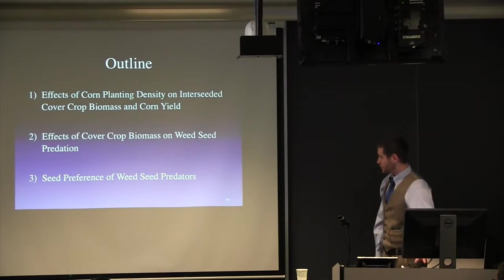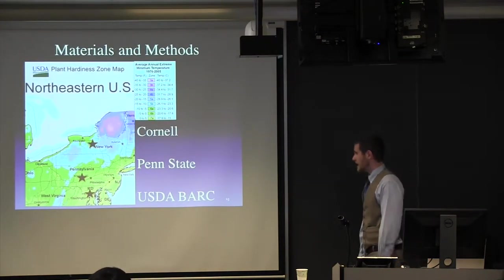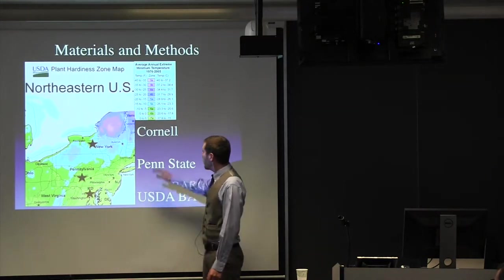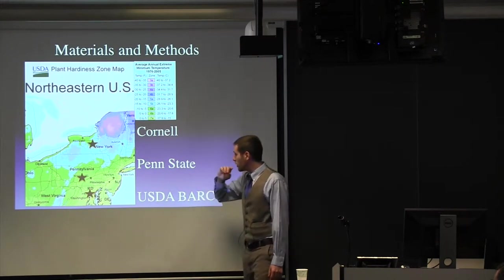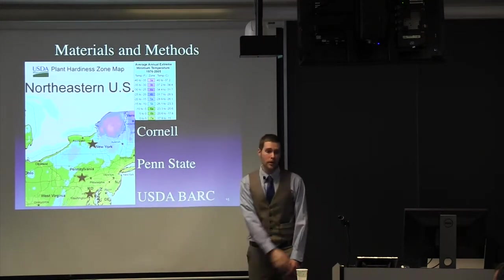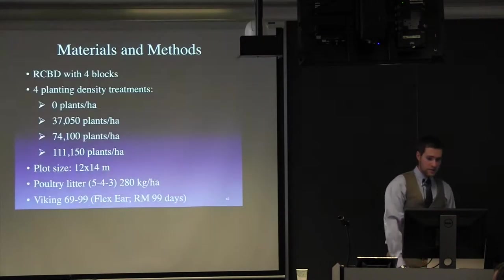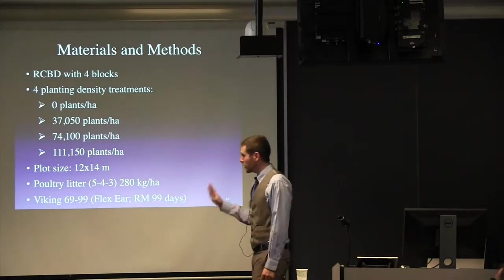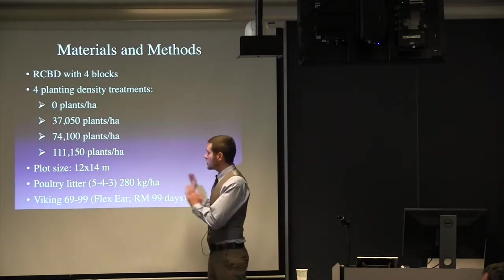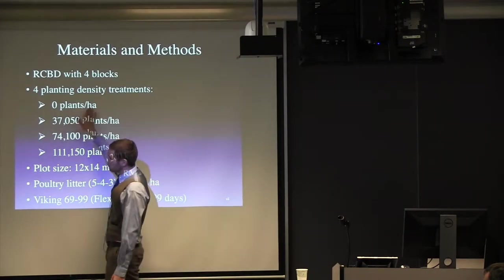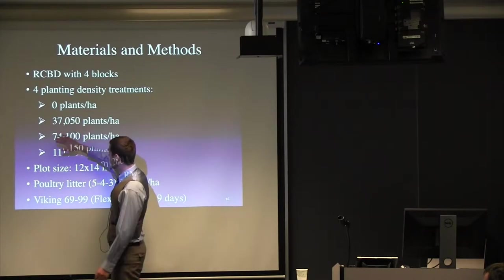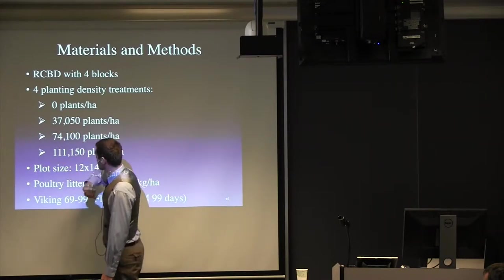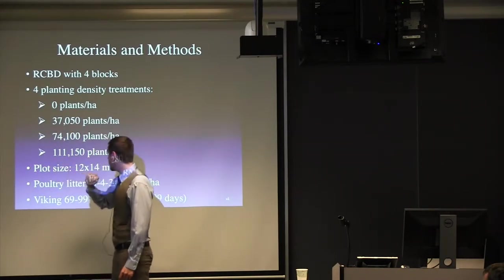So, to address this first one, we set up three experiments last summer, or three replicates of the same experiment, I should say. One at Cornell, one down in Penn State, and one in Maryland at USDA Beltsville. And the experiment was set up in a randomized, complete block design with four blocks at each site. We had four planting densities. These were our treatments. Zero corn plants per hectare, so that was our one control, and then a low, medium, and high plants per hectare, so 37,000, 74,000, and 111,000.